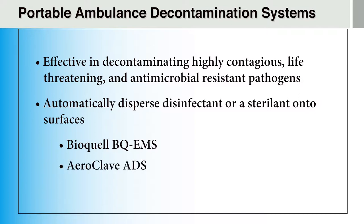The Aeroclave ADS is installed inside the patient compartment and employs an EPA-approved hospital disinfectant dispersed through a nozzle. The Ambustat system disperses small droplets of cold sterilant, a disinfectant with parasitic acid and hydrogen peroxide. Using a combination of both manual and portable decontamination systems is recommended to achieve the most effective and efficient decontamination of ambulances, especially after transferring patients with suspected or confirmed highly infectious diseases.